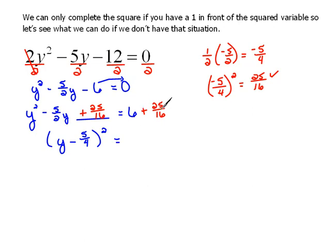Equals. Now here we do need to combine these. 6 plus 25 over 16. Let's see, we'd need to get a common denominator. So that would be 16. And 6 would have to be rewritten as 96 over 16. Plus 25 over 16 would be 121 over 16. So this is now equals 121 over 16.